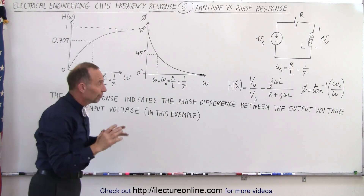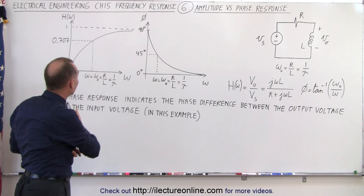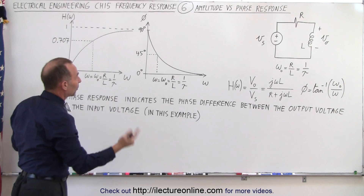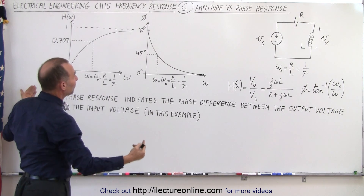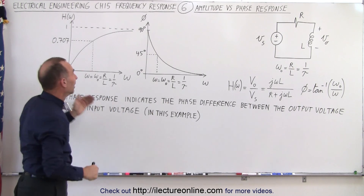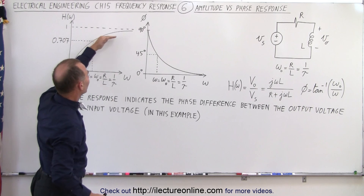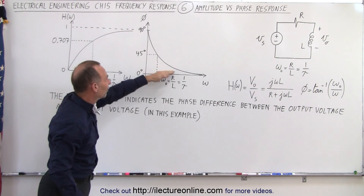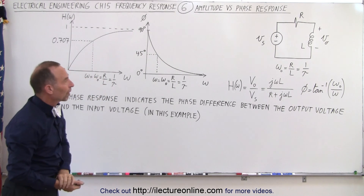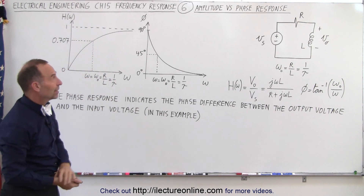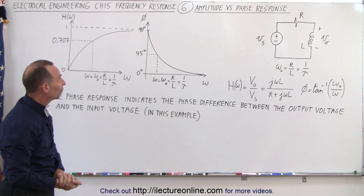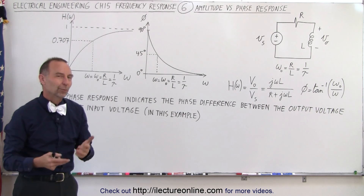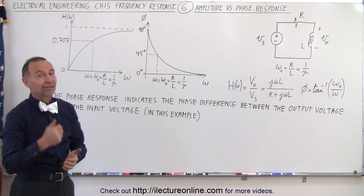Hopefully that gives you a good feel for the difference between the amplitude response and the phase response, and why with inductors they are inversely related to one another. As the amplitude response goes up, the phase response goes down. That's the difference between the amplitude versus the phase response in a simple RL circuit response.